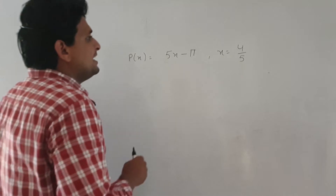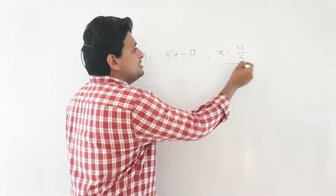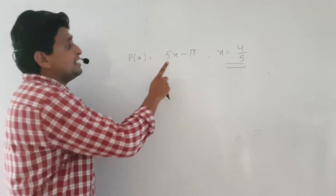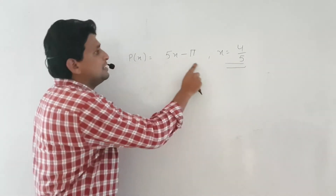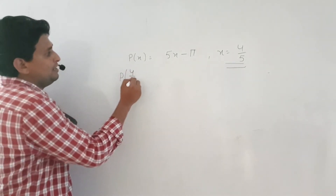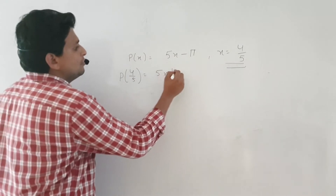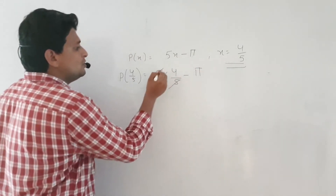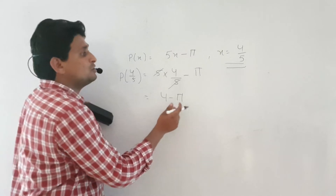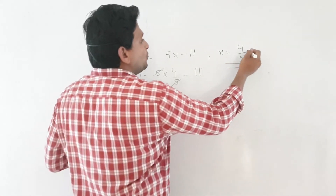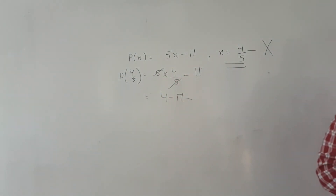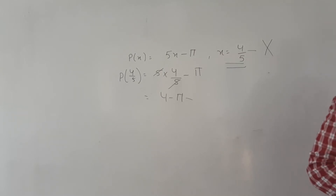Next, check x equal to 4 upon 5 for the same polynomial p(x) equals x plus 1 by 3. The condition for a zero polynomial is: when you put x value in, the polynomial equals 0. Putting x equal to 4 upon 5: 4 upon 5 plus 1 by 3 does not equal 0. So x equal to 4 upon 5 is not a zero of this polynomial.